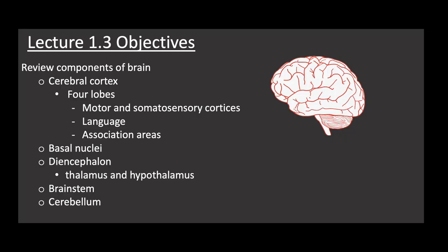Today we're going to have a more in-depth look at the components of the brain. We'll start with the cerebral cortex including its four lobes, where we'll talk about motor and somatosensory cortices, language and association areas. Then we'll move to the basal nuclei — clusterings of cell bodies within the brain — then the diencephalon including the thalamus and hypothalamus, and we'll finish up with the brainstem and the cerebellum.